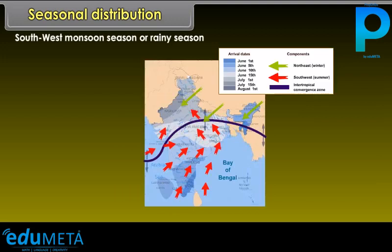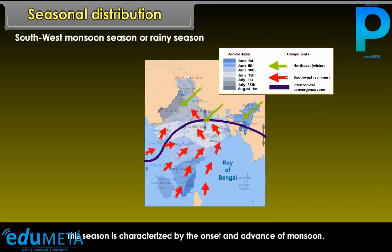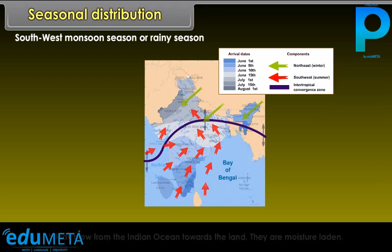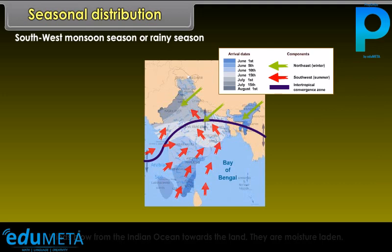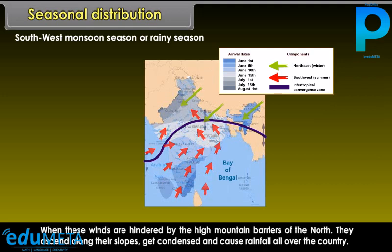The southwest monsoon season, or rainy season, is characterized by the onset and advance of monsoon. Winds blow from the Indian Ocean towards the land and are moisture-laden. When these winds are hindered by the high mountain barriers of the north, they ascend along their slopes, get condensed, and cause rainfall all over the country.